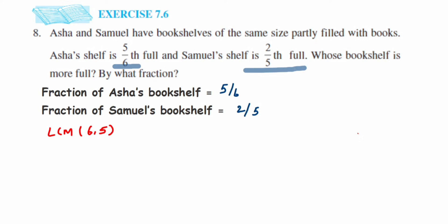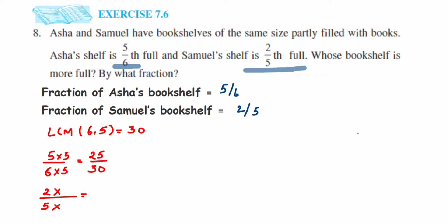Since the denominators are different, we'll take the LCM of 5 and 6, which is 30. We're going to make these two fractions like fractions and then compare the numerators. For five upon six, we multiply numerator and denominator by 5 to get 25 upon 30. For two upon five, we multiply by 6 to get 12 upon 30.